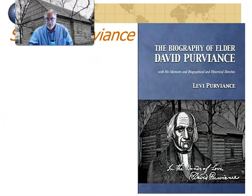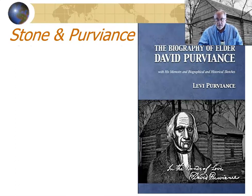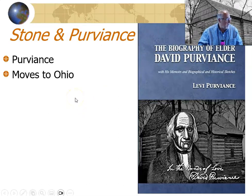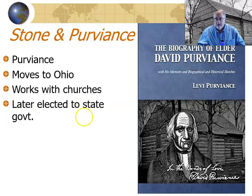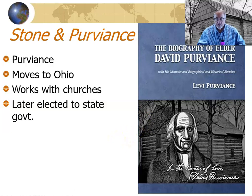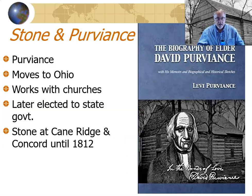David Purviance — Elder David Purviance — will move to Ohio and keep working with the churches there. He will also run for state government and serve in the state government of Ohio, spending the rest of his time there. Stone, of course, stays at Cane Ridge and preaches there and at Concord until 1812.